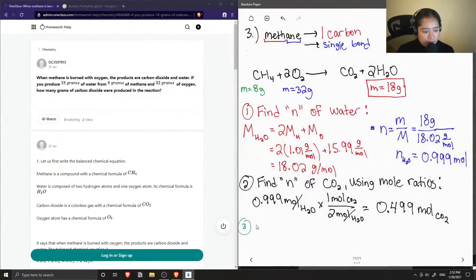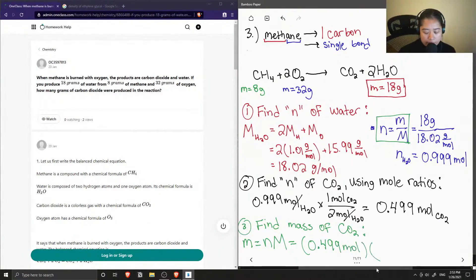And now step three is to find the mass of CO2. So if we rearrange this equation where number of moles equals mass over molar mass, we can find mass by multiplying number of moles by the molar mass of carbon dioxide. So the number of moles we found in our previous step is 0.499 moles of CO2, and the molar mass of CO2 is around 44 grams per mole. And we get a mass of 21.98 grams. So this is our final answer.